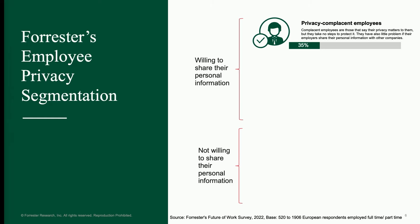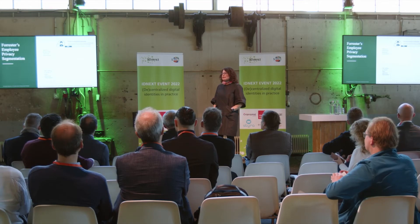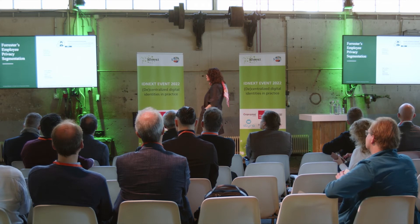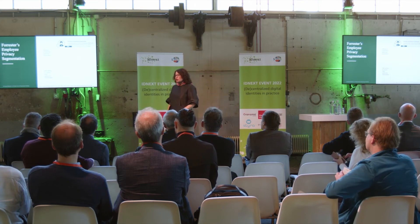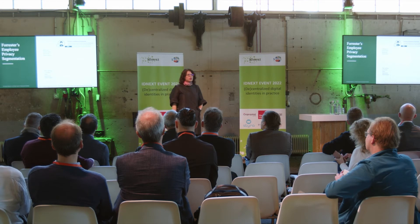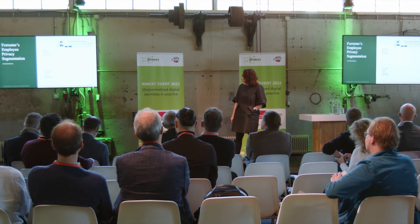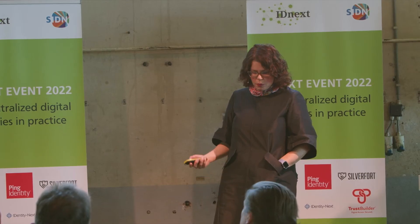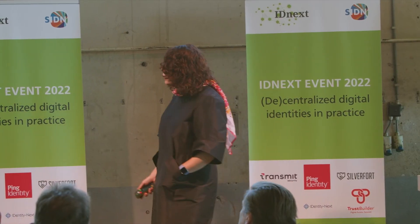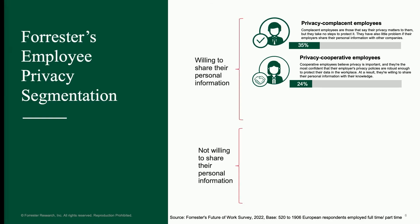You've got your privacy complacent employees — people who don't really take many steps to protect their privacy. In theory it matters to them, they trust their employers, and they're not really concerned about their employer sharing their data with other companies. These folks are somewhat unaware and somewhat comfortable. Here in Europe, that'll be about 35% of your population. Then you've got your privacy cooperative employees — they are really confident that their employer is doing a good job with good privacy policies and good data handling practices.